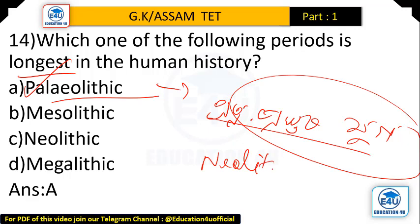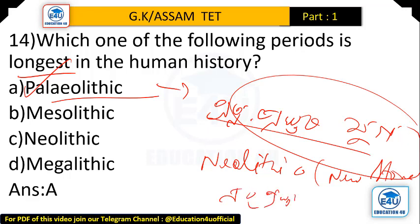When a river enters the plain, it bends and flows, forming large bands known as meanders. This occurs when rivers reach flat plains.